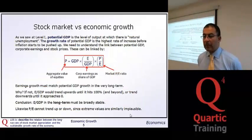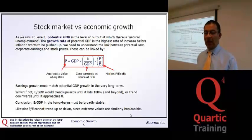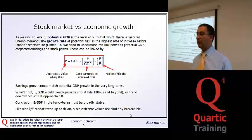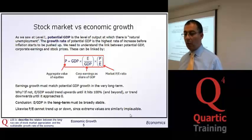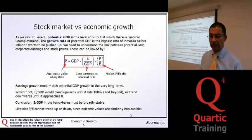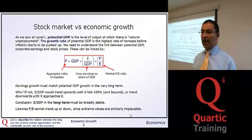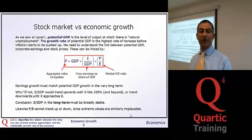Now, a little bit of mathematics — stock market versus economic growth. Growth rate is how fast GDP can grow before you get too much inflation, typically no more than a couple of percent for most countries. Looking at the algebra: P equals GDP times (E/GDP) times (P/E). The two GDPs cancel, the two E's cancel, so algebraically this is fairly clear. Equity prices P are linked to GDP, to the share of GDP represented by corporate earnings (E/GDP), and to the overall market P/E ratio.